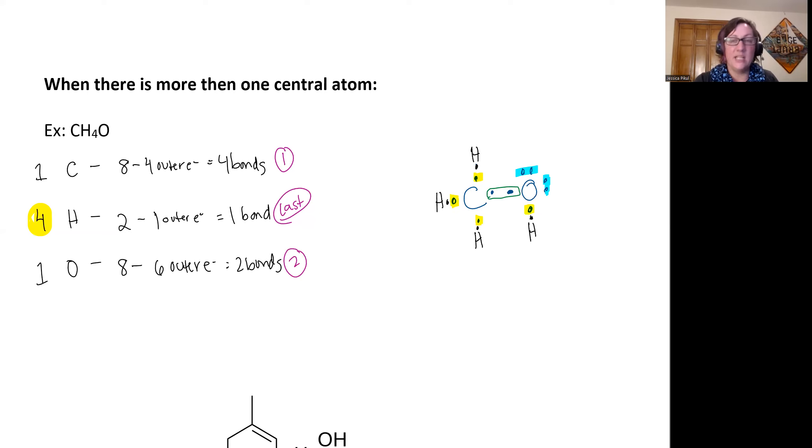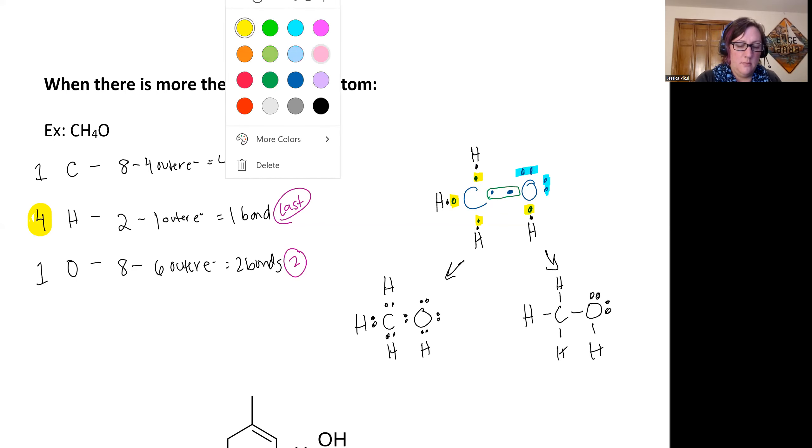These can all connect, so I can now clean this up and redraw it in one of two ways. I can have my electrons showing but sandwiched in between the atoms that they have the bonds with. Or I could convert those bonding electrons into a line. And these are both acceptable Lewis structures.